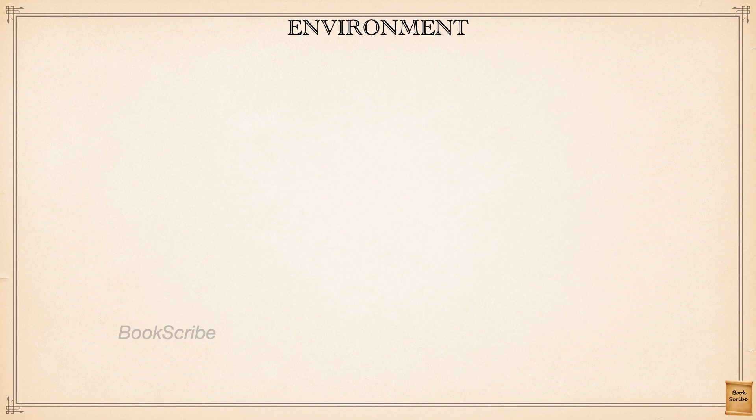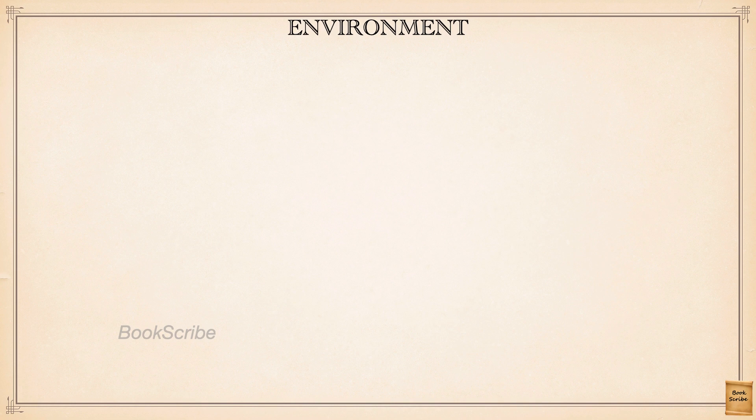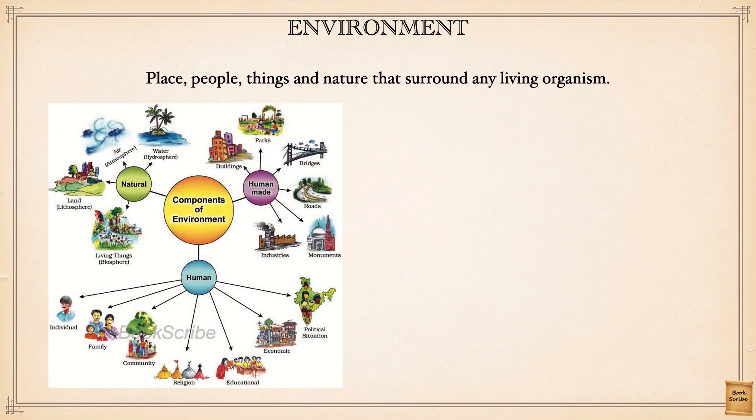In both cases that place is our environment because we are living in those surroundings. Around any living organism — the place, the people, other organisms, other living beings, things, and the natural settings — all these make an environment. We can say environment is a combination of both natural and man-made phenomena.